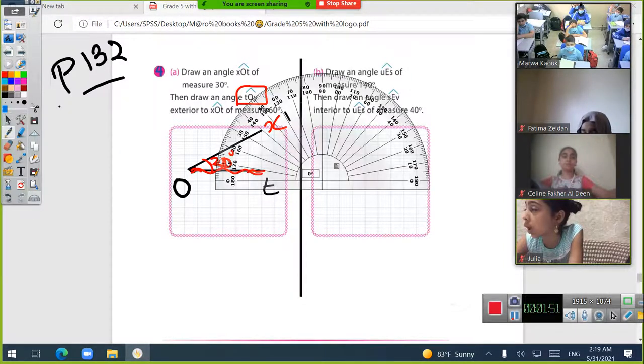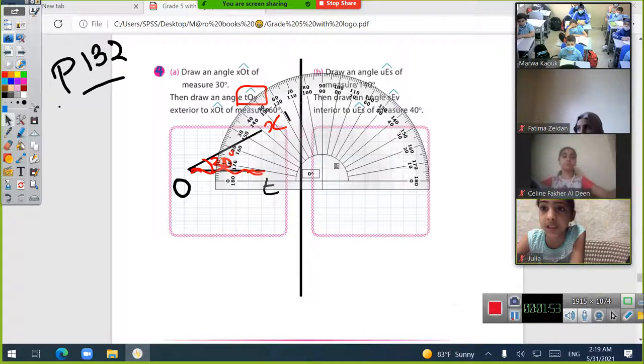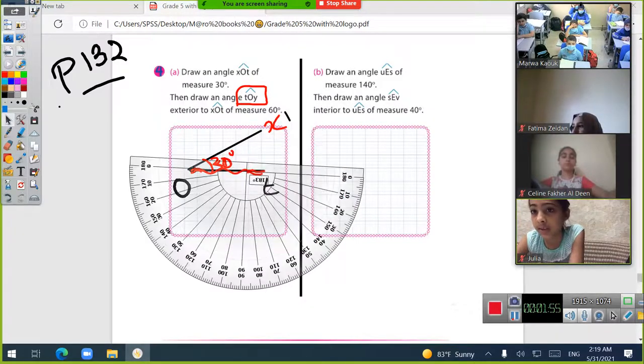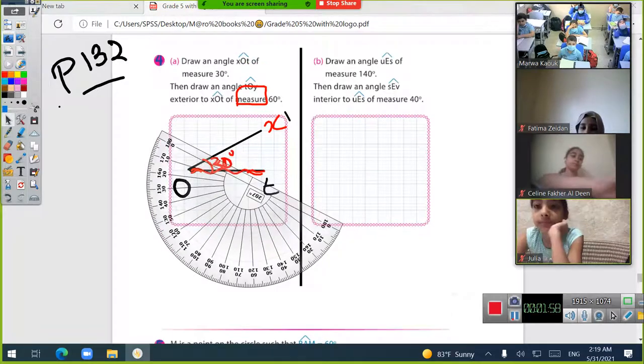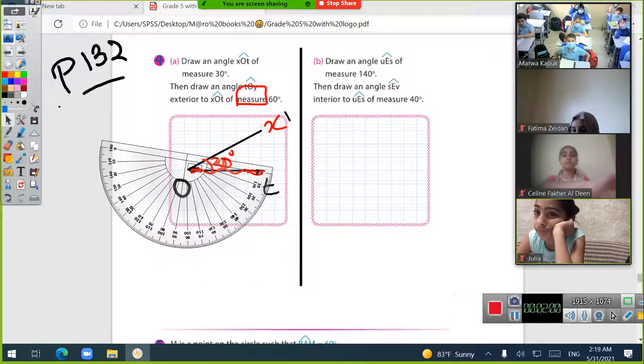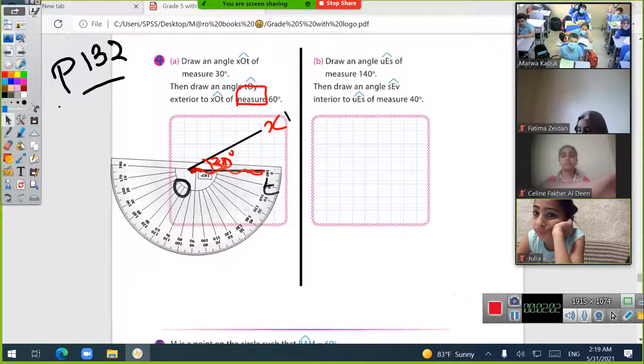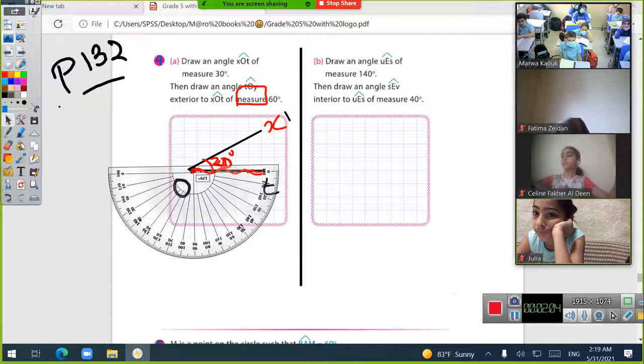I will put my protractor here underneath, align it with line OT, and count to get 60 degrees.